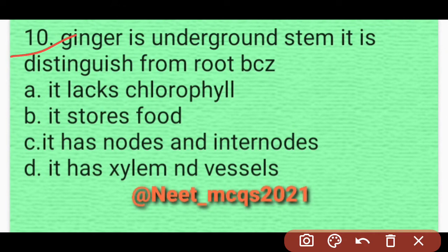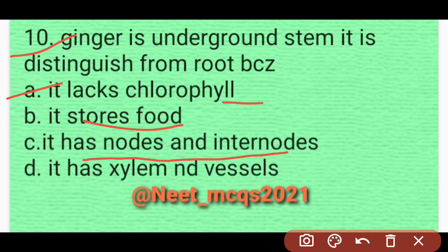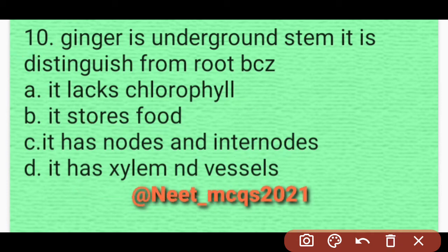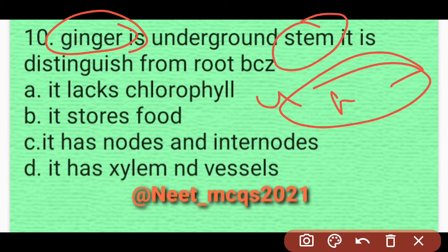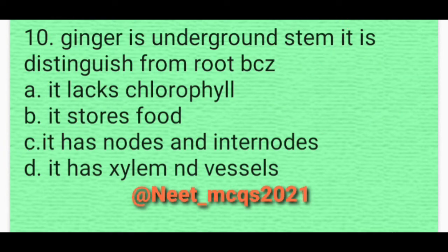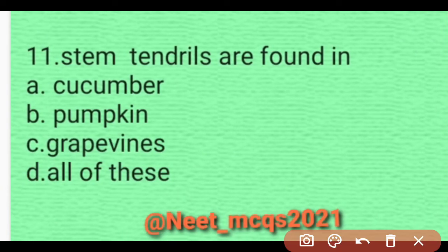Question 9: Ginger is an underground stem. It is distinguished from root because it has nodes and internodes. Ginger is basically an underground stem, and in stems, nodes and internodes are present. So option C is correct.